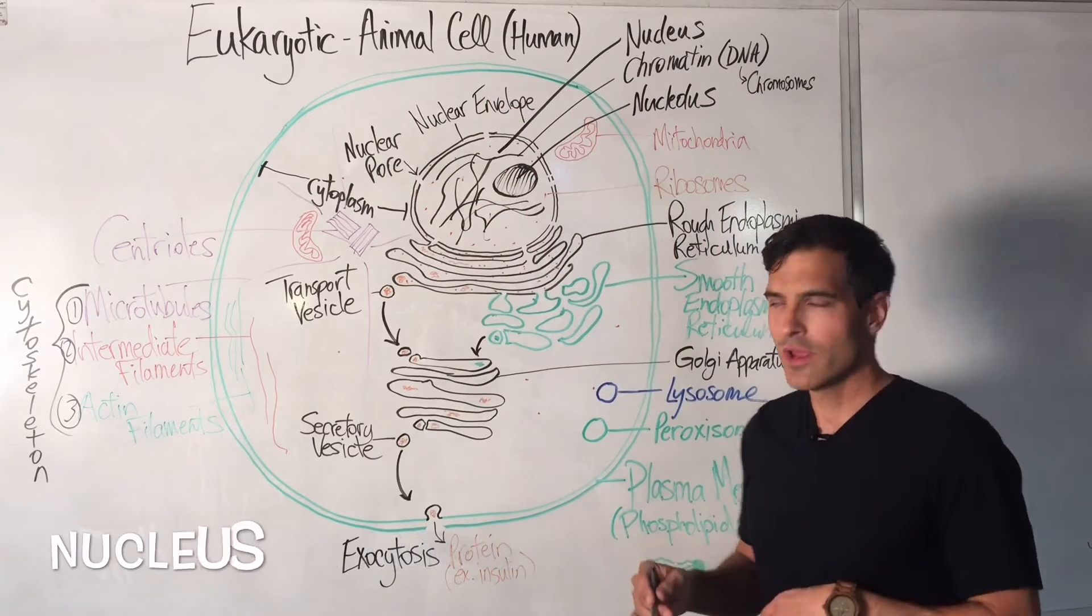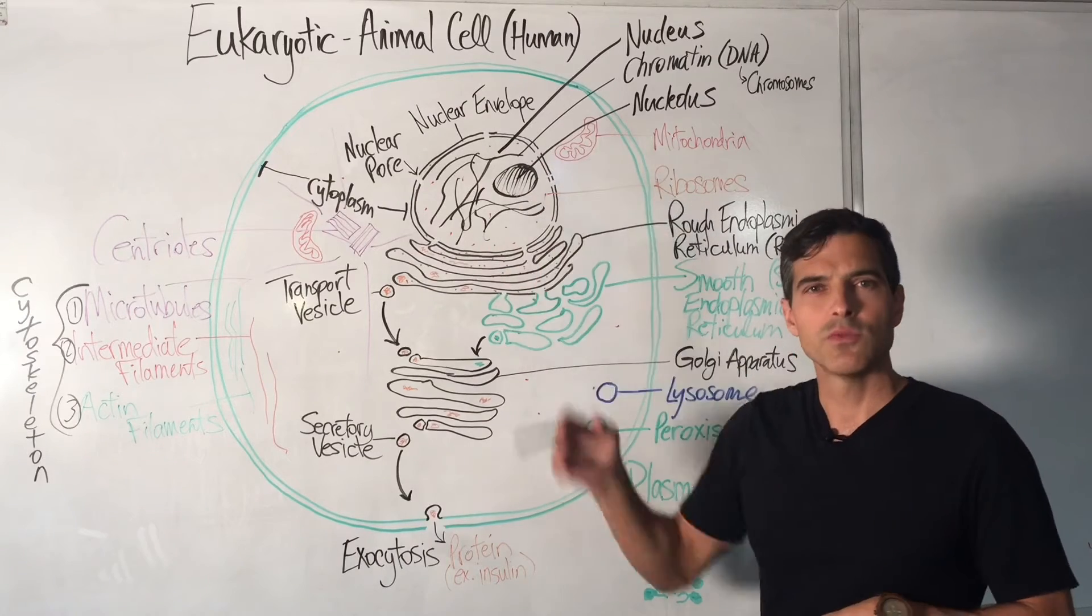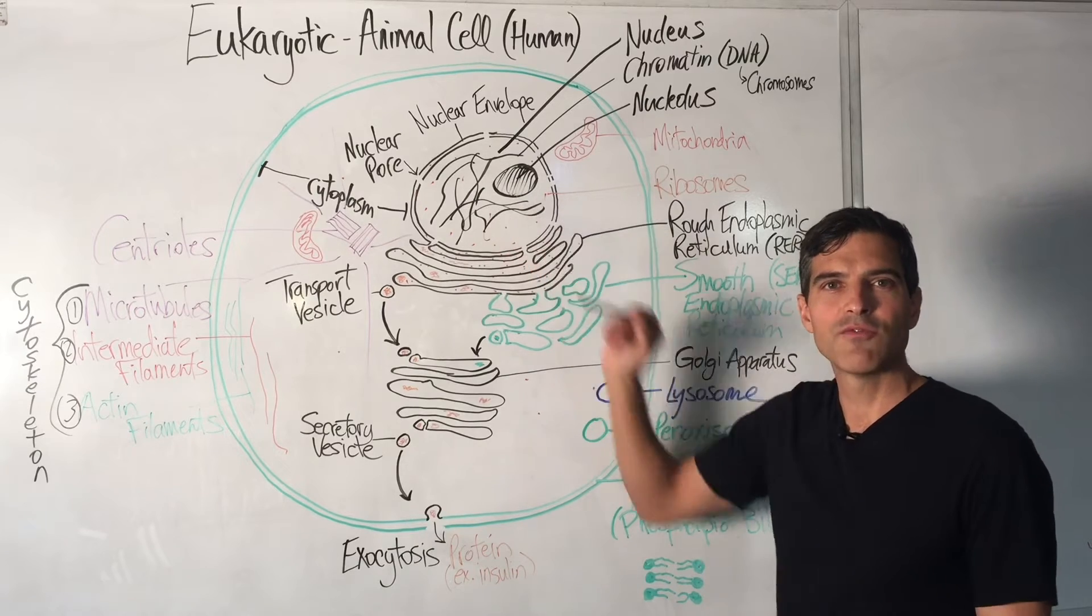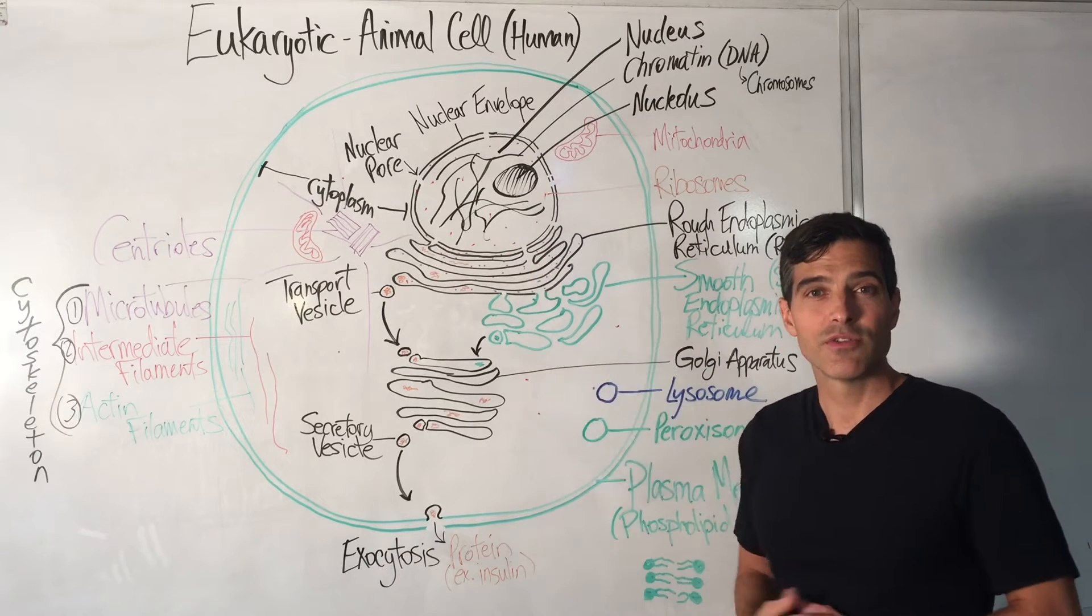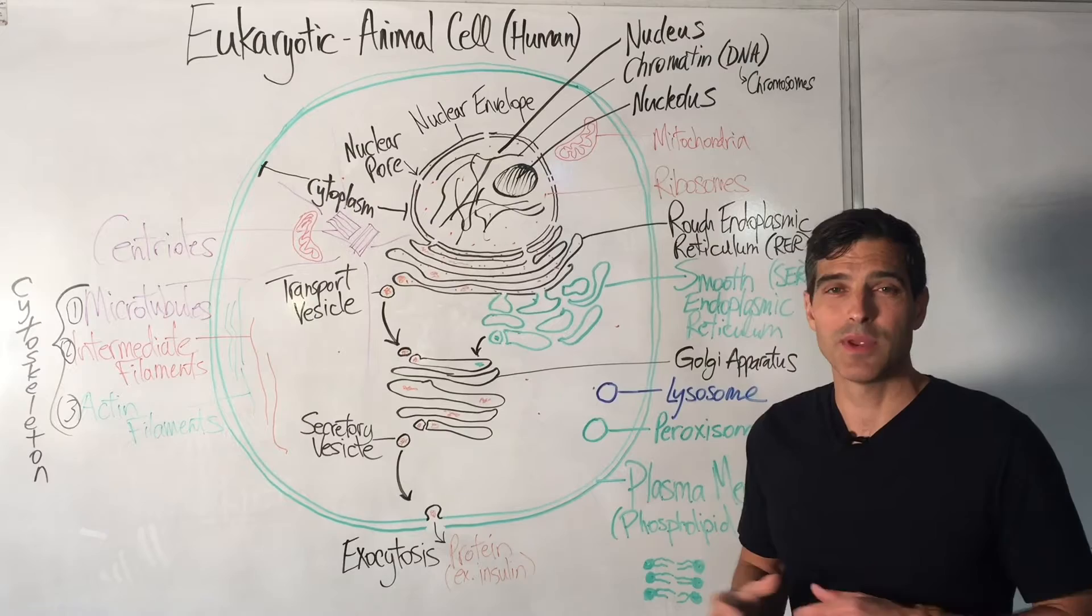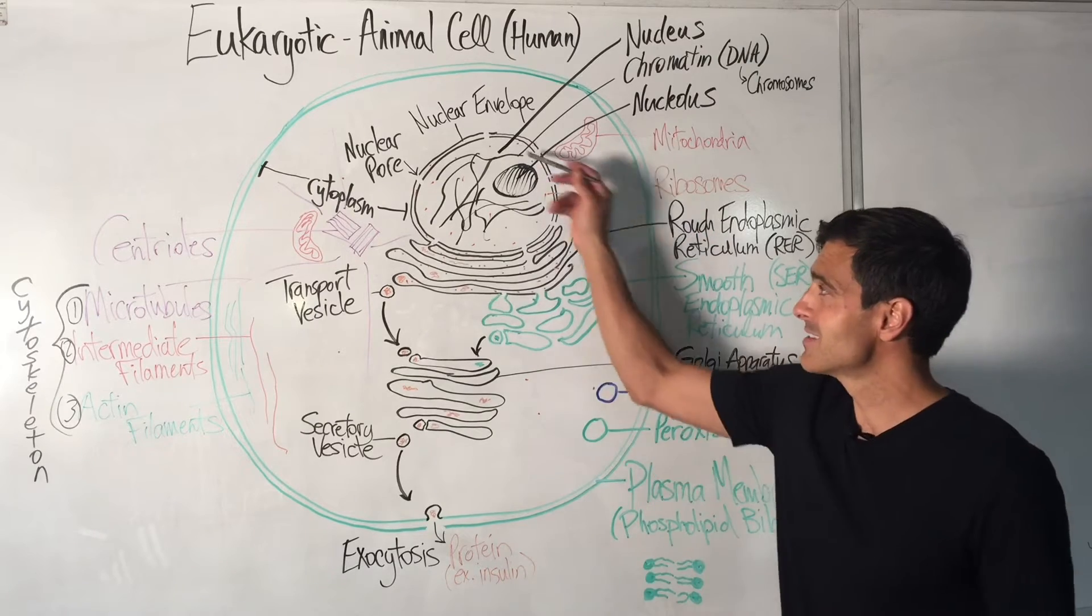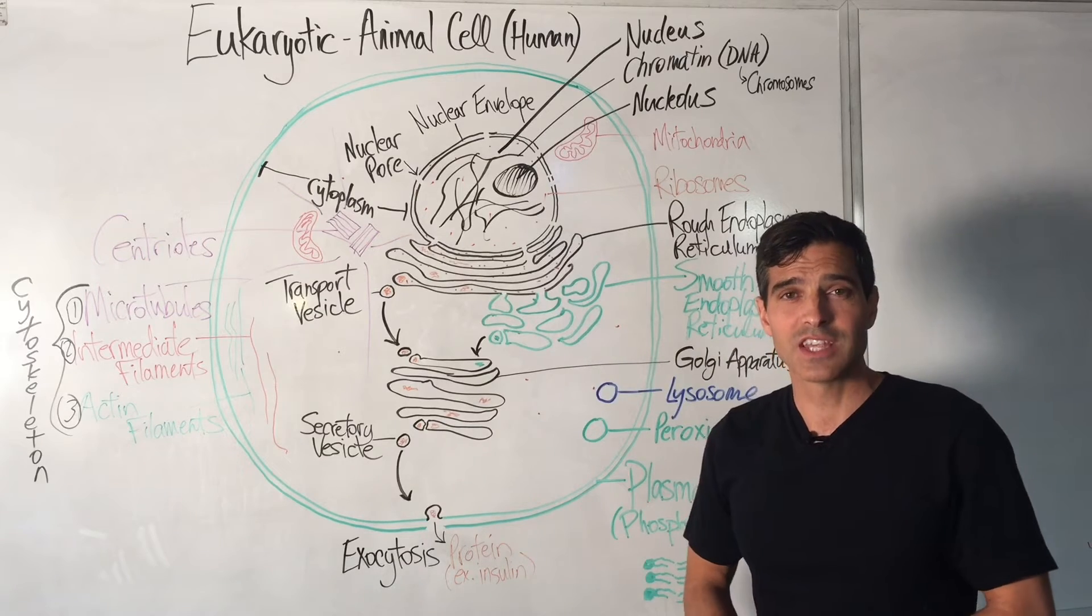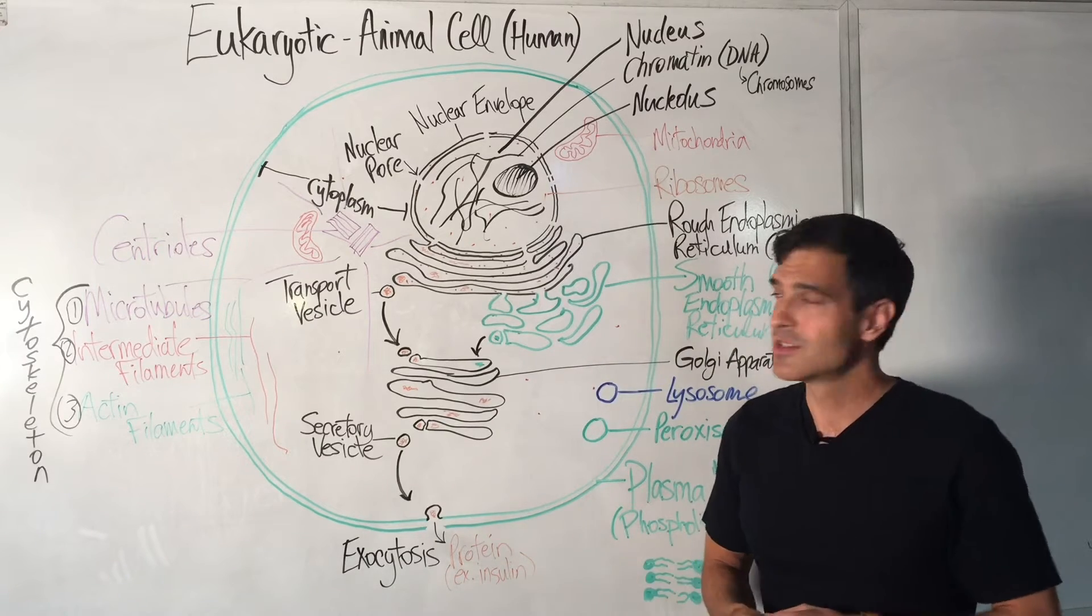Let's start with the nucleus. We call that the brains of the cell. It houses all the genetic information. In a human, there's three billion base pairs of DNA inside the nucleus, and we have the nucleus in all trillions of our cells, except for our red blood cells.